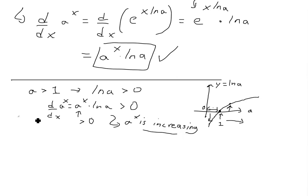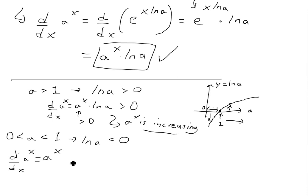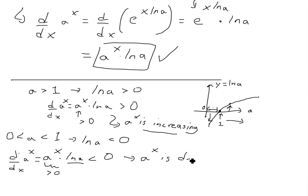Likewise, if a is less than 1 but greater than 0, then ln a is less than 0, because it falls in the negative region of the log graph. So we have d/dx of a to the x equals a to the x times ln a, which is less than 0 — a positive times a negative gives a negative — meaning the function a to the x is decreasing.